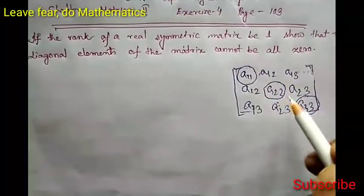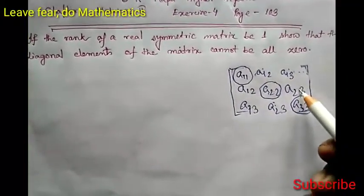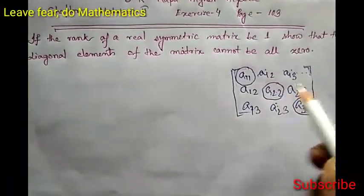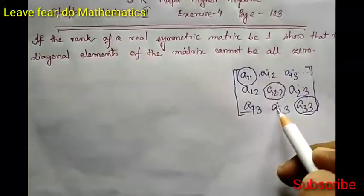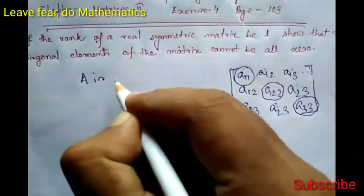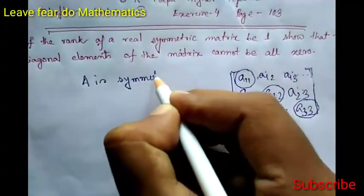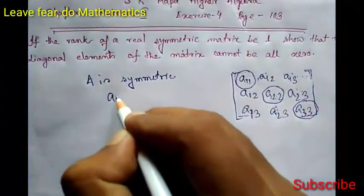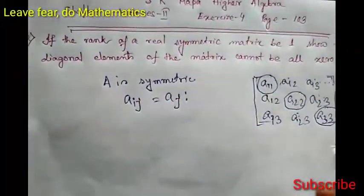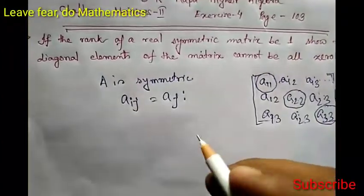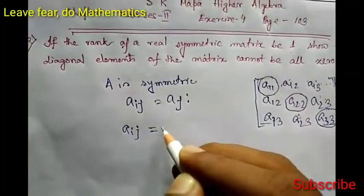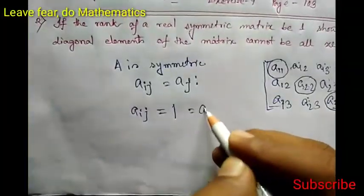The elements above the diagonal — these three — are free, they can be anything. Once the elements above the diagonal are chosen, the elements below the diagonal will be fixed. This is the basic case. Since A is symmetric, this means the a_ij entry equals the a_ji entry. Since A is a rank-one matrix, suppose the a_ij entry equals 1, then our a_ji entry will also equal 1.